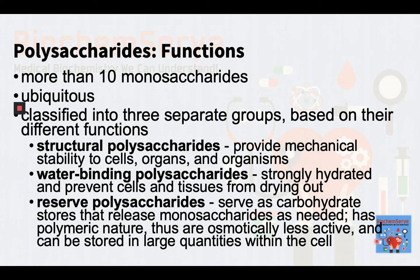As a rule of thumb, polysaccharides contain more than 10 monosaccharide units, whereas oligosaccharides contain 3 to 10 monosaccharide units, but the precise cutoff varies somewhat according to convention. Polysaccharides are ubiquitous in nature. They can be classified into three separate groups based on their different functions.